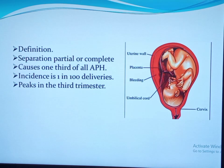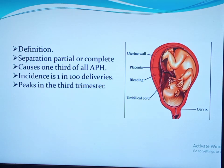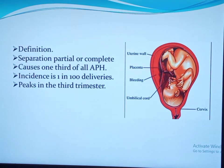In the case of placenta previa, even though there is a separation of the placenta, we don't call it abruption. The separation of the placenta can be partial or complete. In the case of complete separation, there is a complete detachment of the placenta from the uterine wall, and the maternal and fetal sequelae are higher.